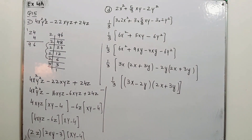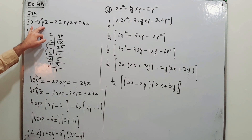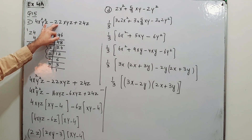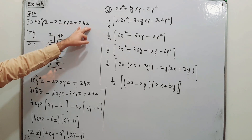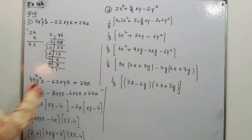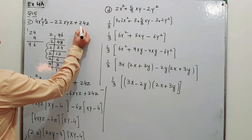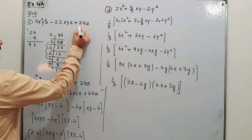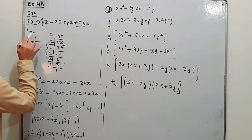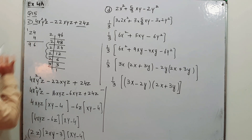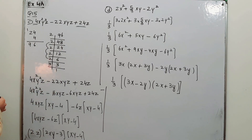Question number 15: you have to factorize 4x²y²z minus 22xyz plus 24z. As we have three terms, we have to factorize using the midterm break method. The 24 will be multiplied with 4, so 24 into 4 gives you 96.